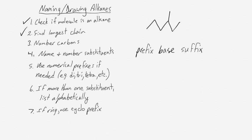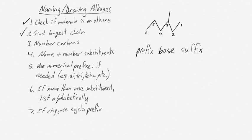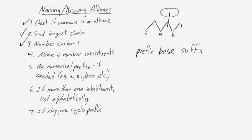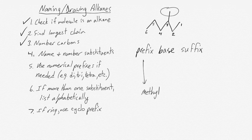You always start from the side that is closest to a substituent, and in this case that means we have to start on the right. So we have a six-carbon-long chain and we've started numbering on the right. Now we have to name and number our substituents. We have one substituent — one group coming off of our carbon chain — and it is one carbon long. There are tables in your textbook correlating number of carbons in a substituent to its name. A one-carbon substituent is a methyl. Our methyl group is on the third carbon, so we put '3-' in front of our prefix.